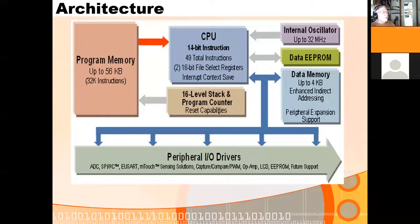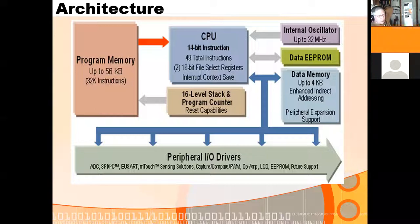The return address for interrupts and functions is stored on a 16-level stack. There's also a program counter and some reset abilities. The CPU runs on an internal oscillator module which we will normally set at 4 MHz, though you could set it as high as 32 MHz. I'm doing 4 MHz just because it causes us to have one instruction every one microsecond — a nice round number.